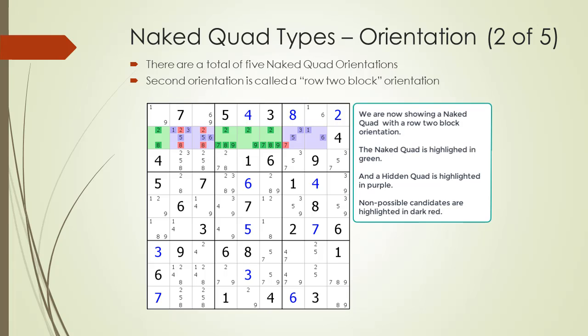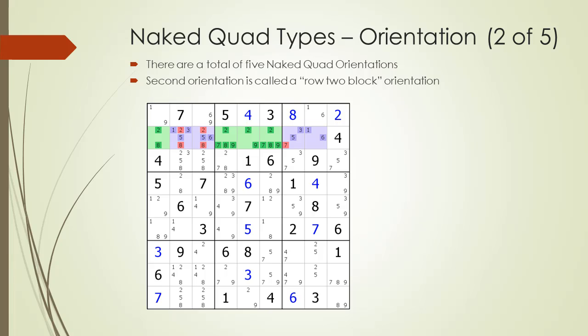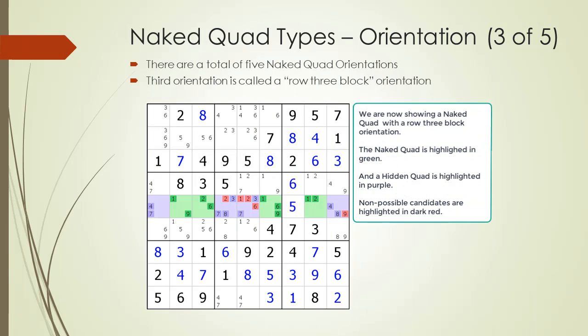In this example, we have 1 cell in block 1 and 3 cells in block 2, but all the cells occur in row 2. The third orientation is when we have a naked quad in a row, but the 4 cells making up the quad are occurring in 3 different blocks as shown. In this example, we have 2 cells in block 4, 1 cell in block 5, and 1 cell in block 6.